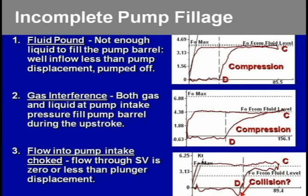Here are the three conditions that result in incomplete pump fillage. Pump card number one we call a fluid pound card. It's unanchored tubing, because the slope of the line here has the loads up near the maximum loads based on the fluid level at the pump intake. We compress a little bit of gas inside the pump, and we have a sudden drop in load — that sudden drop in load is what we call the fluid pound.